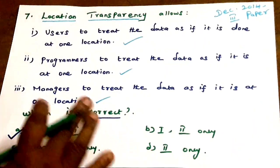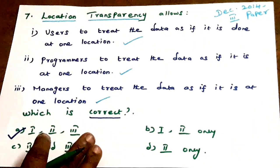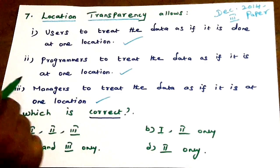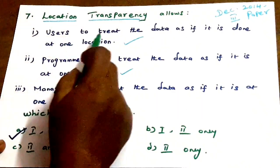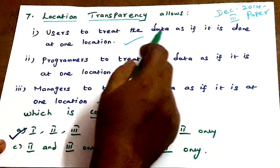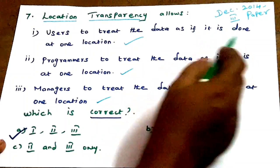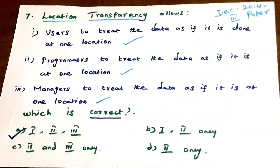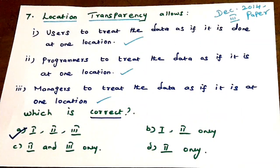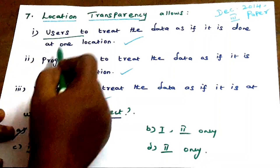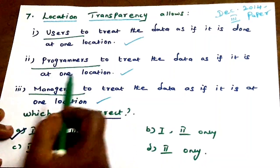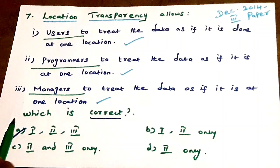Next question: location transparency allows — three options may be correct. Users treat the data as if it is at one location. Location transparency means users, programmers, and managers can treat data as stored at one location.